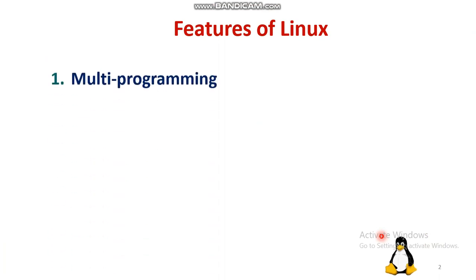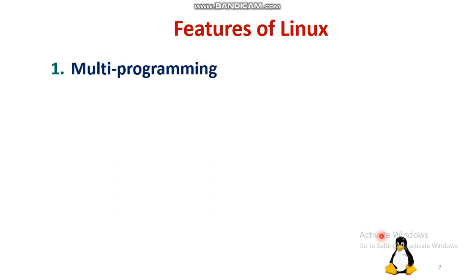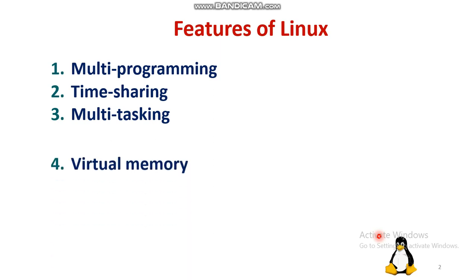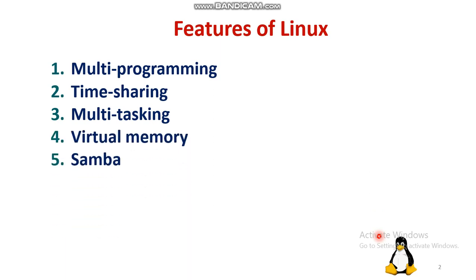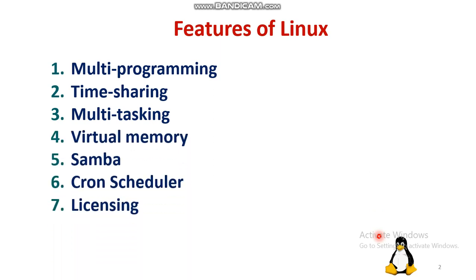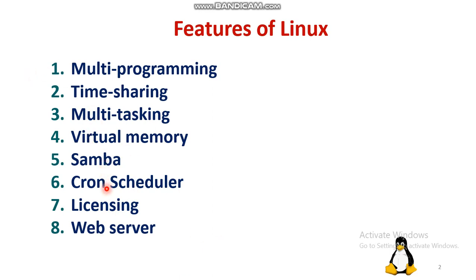There are various features of Linux like multiprogramming, timesharing, multitasking, virtual memory, Samba, cron scheduler, and licensing. Among these eight features, the first three are similar to a general operating system, and the special features of Linux are virtual memory, Samba, cron scheduler, licensing, and web server.